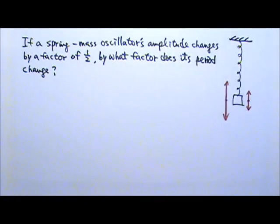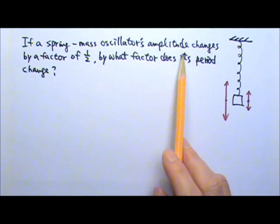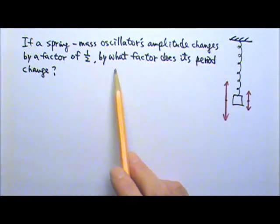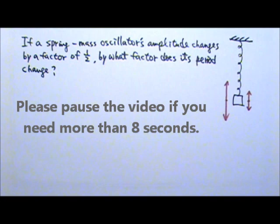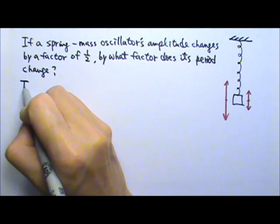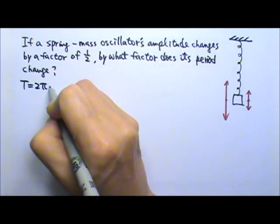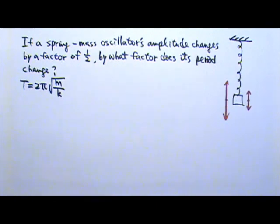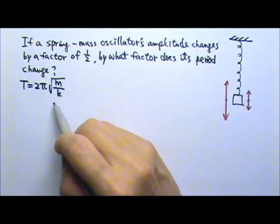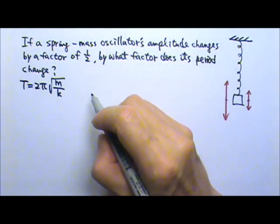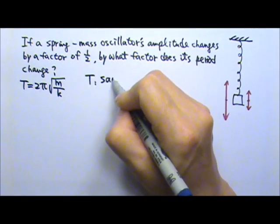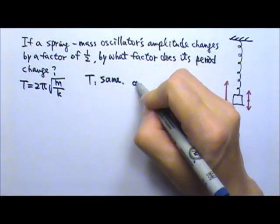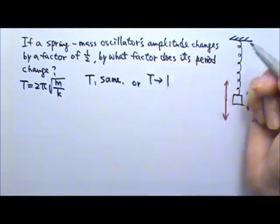Let's try one more question. If a spring-mass oscillator's amplitude changes by a factor of one-half, by what factor does its period change? The period equation is 2π times the square root of m over k — there is no amplitude in this equation, which means the period does not depend on the amplitude. So the period stays the same; it does not change, or equivalently, the period changes by a factor of one.